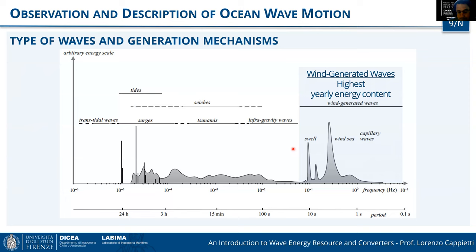The surface gravity wave motion is a dynamic process — it varies in time and space, generated by a perturbation of the equilibrium state, acting under the gravity force field. That's why we use the term 'gravity waves.' There are many possibilities that can trigger wave motion, but the most frequent and energetic is wind-generated wave motion. Wind blowing on the sea surface creates a perturbation that increases in time until waves form and propagate toward the coast.